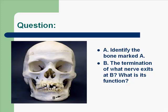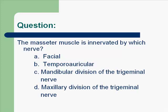Now for some review questions. What bone is A trying to identify? That would be the maxilla. The termination of what nerve exits B and what is its function? The inferior alveolar nerve exits at the mental foramen and becomes the mental nerve, which is sensory to the lower lip and the skin of the chin. The masseter muscle is innervated by the mandibular division of the trigeminal nerve, V3.